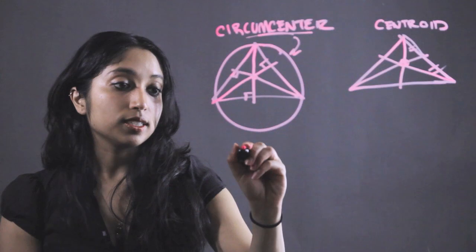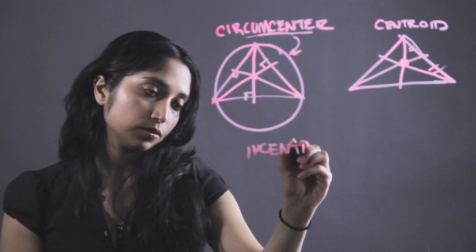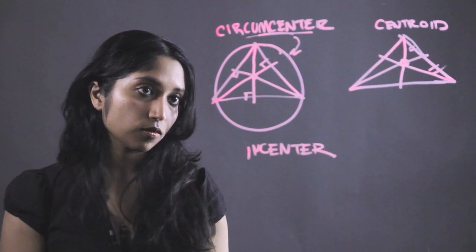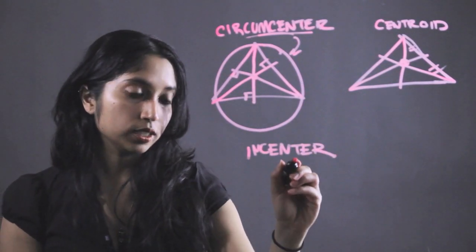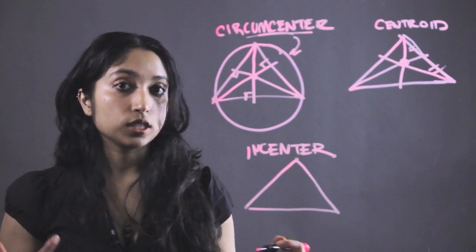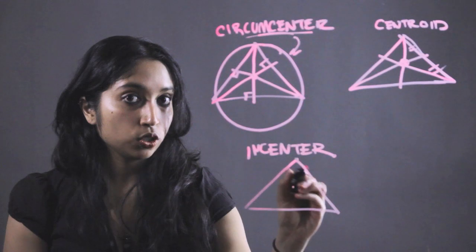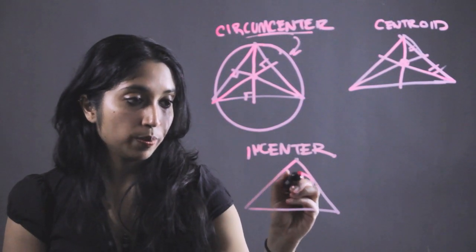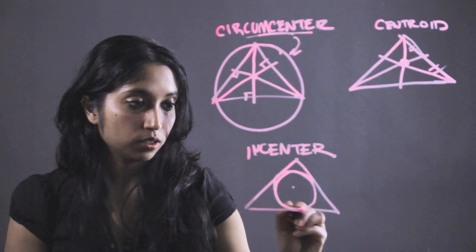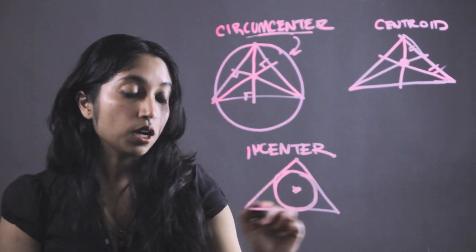Last thing we're going to go over is the in-center. So we're going to start with the triangle this time. And the in-center is defined as the center of the largest circle that's going to fit in this triangle. So the biggest circle that will fit in here, center of that circle, that is the in-center of this triangle.